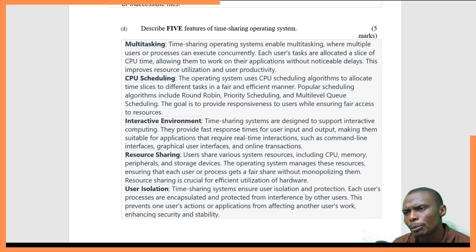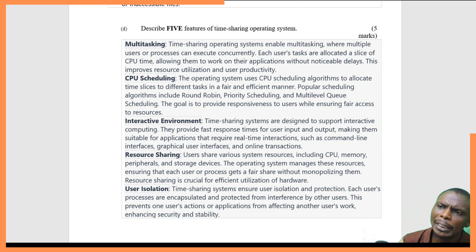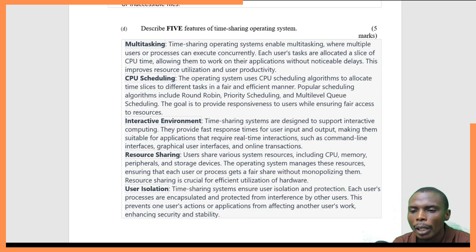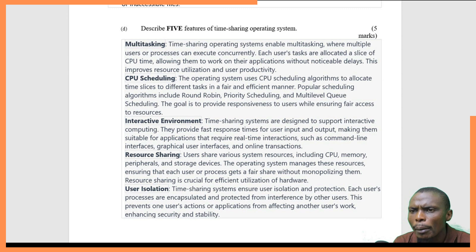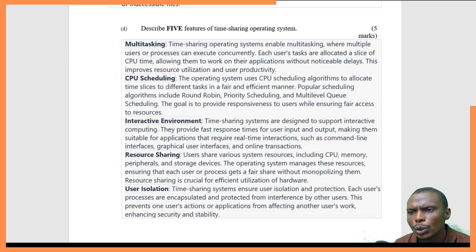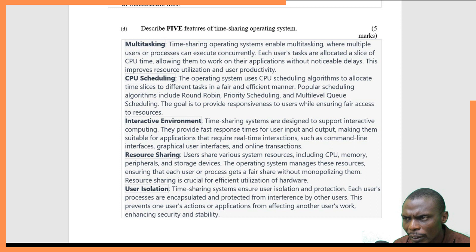Next, describe five features of a time sharing operating system. A time sharing operating system is the type of operating system that allows multiple processes to run on the CPU, allocating small time segments to these processes to ensure that all of them run at the same time. One feature is multitasking — time sharing operating systems enable multitasking where multiple users or processes can execute concurrently. Each user or task is allocated a small time slice of CPU time, allowing the CPU to run on each and every application without any delay.